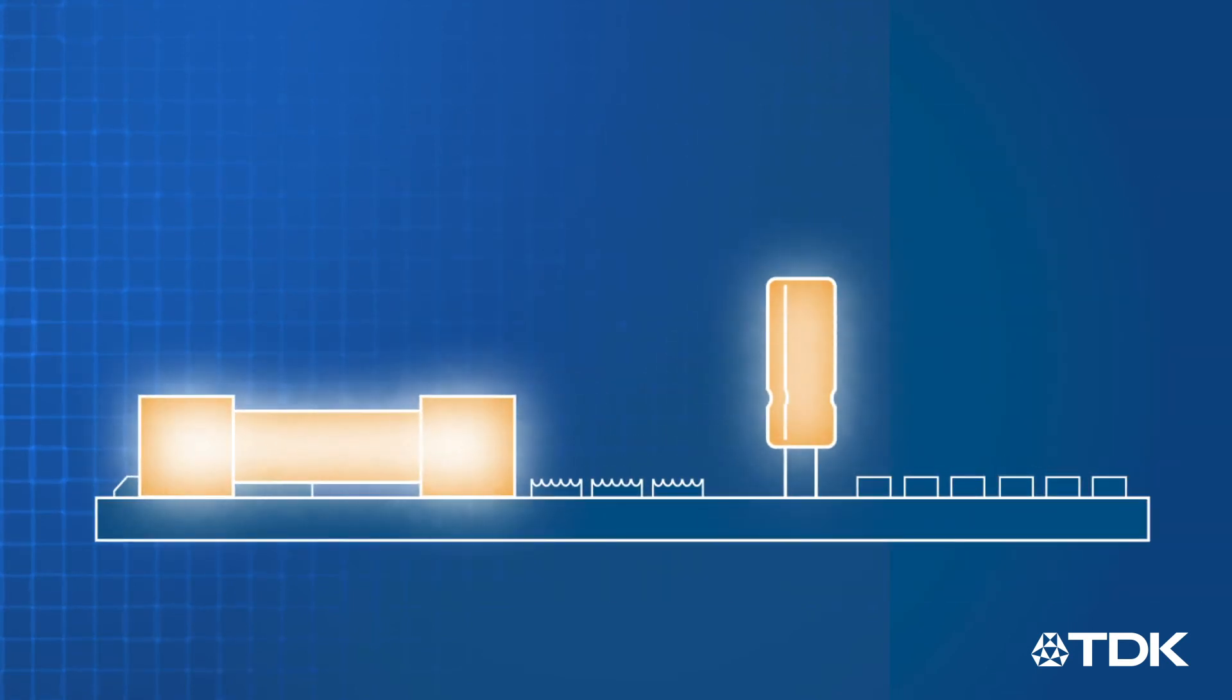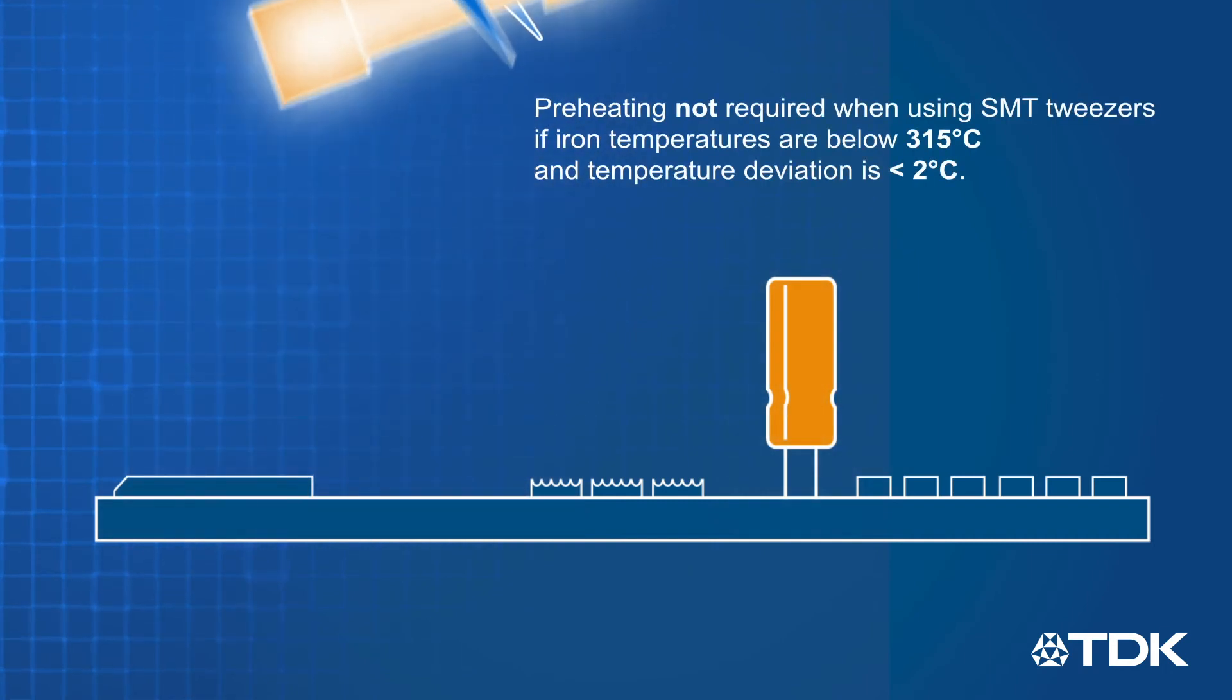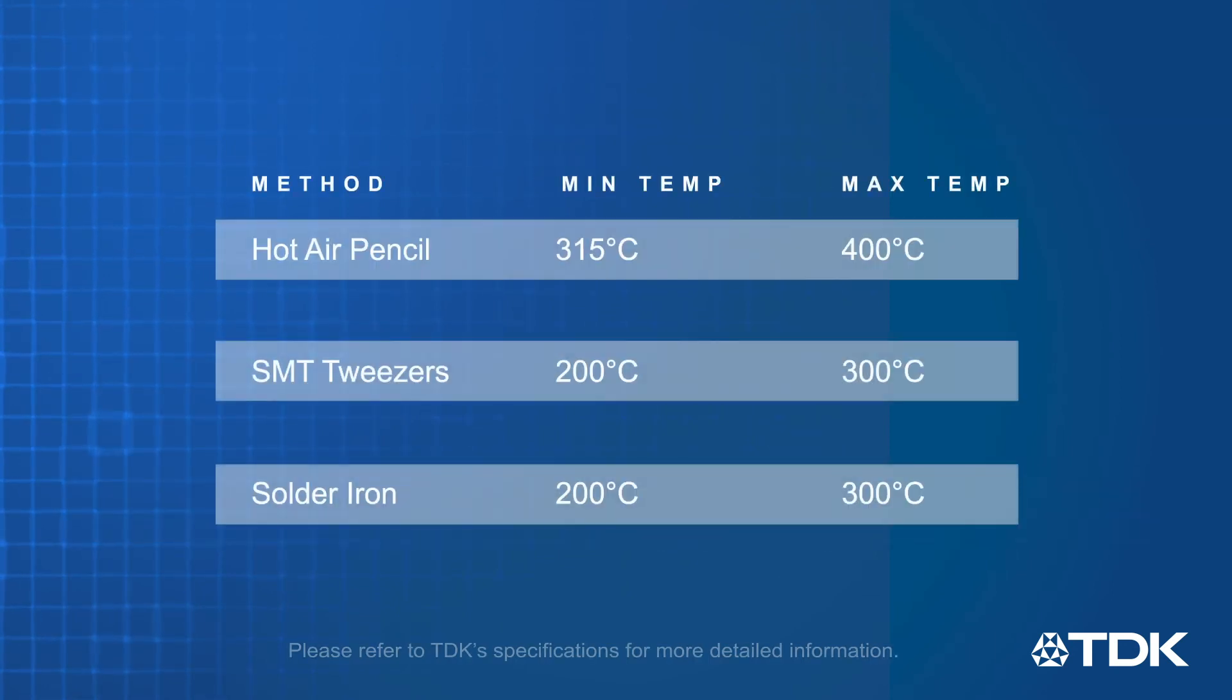Though preferred, preheating is not required when using SMT tweezers if the iron temperatures are below 315 degrees Celsius and temperature deviation from one tip to the other is less than 2 degrees Celsius. Solder settings will vary slightly depending on the type of solder used.